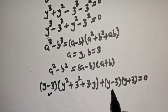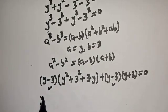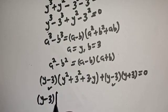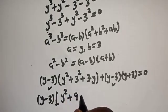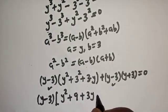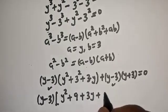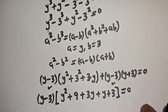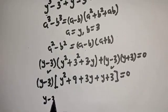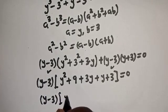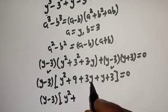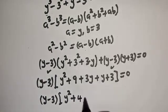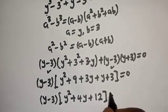y minus 3 is common. Let's bring it out. y minus 3, bracket, y squared plus 9 plus 3y plus y plus 3, giving y minus 3, bracket, y squared plus 4y plus 12, is equal to 0.